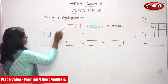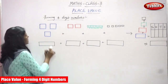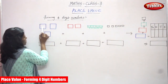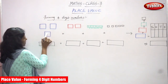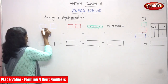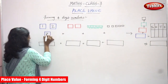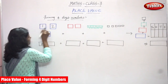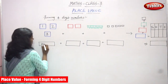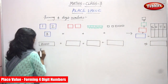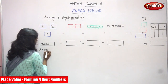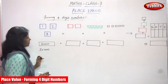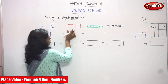Now we are going to see forming four-digit numbers. You have to consider three squares I have drawn. The first one is a thousand, the second one is a thousand, and the third one is a thousand — one, two, and three. So each square is a thousand. You have to write three thousand, that means three into thousand, you can get three thousand.